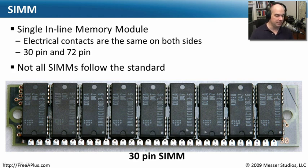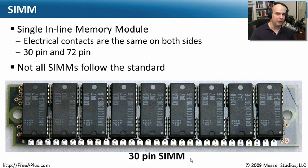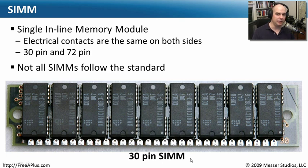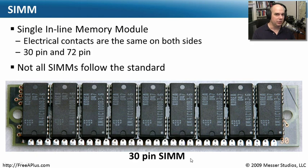There are different types of SIMMs with different numbers of pins — 30-pin and 72-pin. This is a 30-pin SIMM; there are some that are a little bigger and denser that are 72-pin SIMMs. Not all SIMMs follow exactly the same standard. So make sure that if you have a motherboard, you're syncing up with exactly the type of SIMM that should go on it. Although they all look very similar, behind the scenes there are differences between these SIMMs.